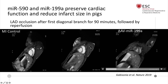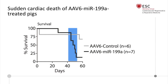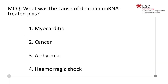We were excited about these results and looking for long-term effects. However, at about two months, almost all the treated animals suddenly died, while the controls, though with depressed cardiac function, were still alive. The second question: what was the cause of death? Myocarditis, cancer, arrhythmia, or hemorrhagic shock? I inserted this question because when we submitted the paper, all the reviewers asked this.